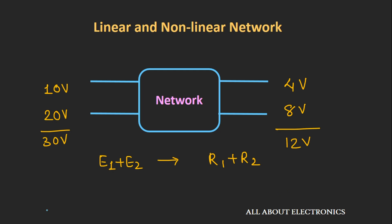Combining the properties of additivity and homogeneity: if we apply excitation αE1 plus βE2 to the network and get a response αR1 plus βR2, then we can say the network is linear — it follows the principle of superposition. If it does not follow the superposition theorem, then the network is nonlinear.